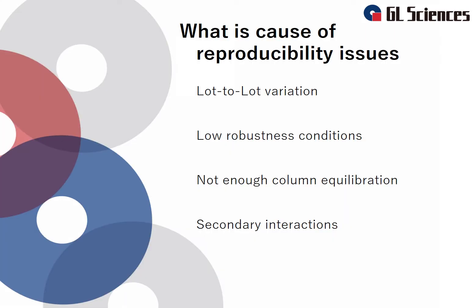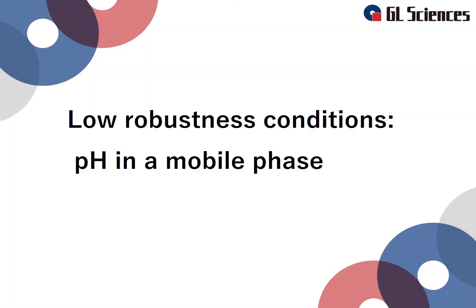There are multiple causes and they can be difficult to identify. There are four relatively common causes concerning inquiries we receive: lot-to-lot variation, low robustness conditions such as mobile phase pH, not enough time taken for column equilibration, and secondary interactions such as silanol interactions. This presentation will focus on the impact of mobile phase pH on the robustness of a method.